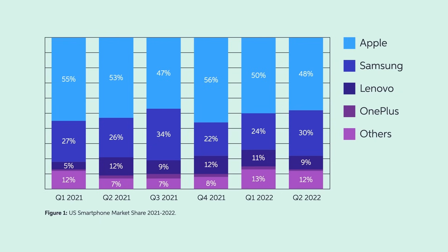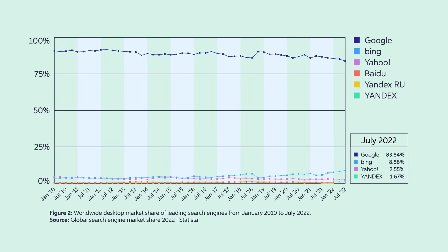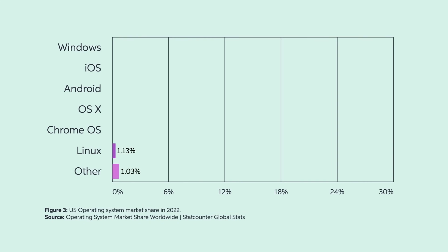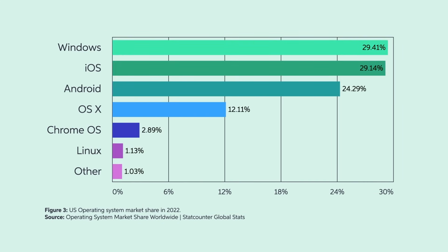As you can see from Figure 1, in 2022, almost 70% of all smartphones owned in the U.S. were produced by either Apple or Samsung. Google has consistently controlled more than 80% of the search engine market in the past 12 years, as shown in Figure 2. Figure 3 shows similar numbers for operating systems. In 2022, Apple, Windows, and Android were roughly equally dividing 83% of the U.S. operating systems market.